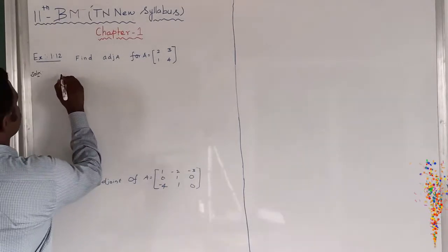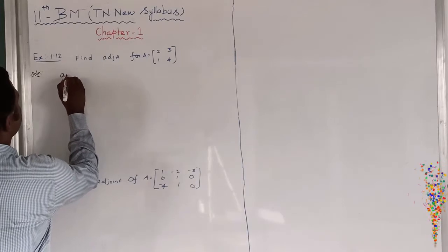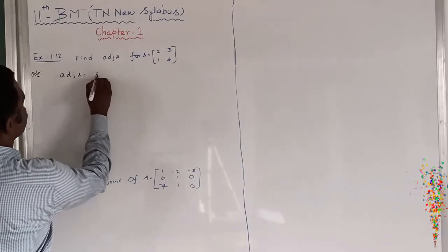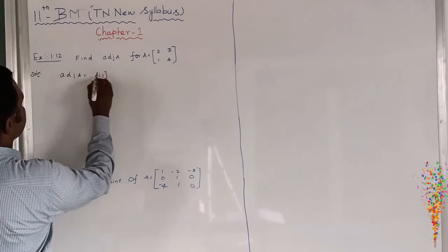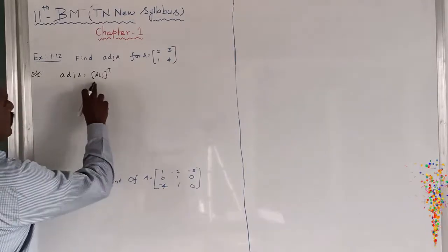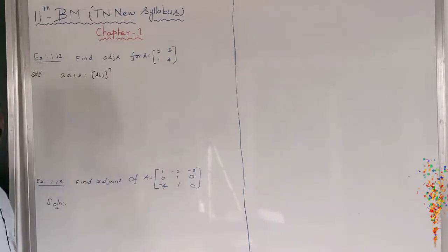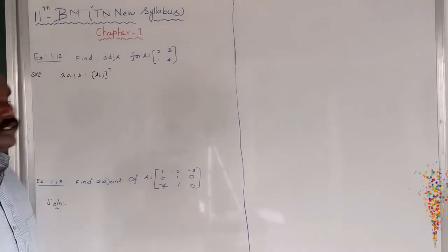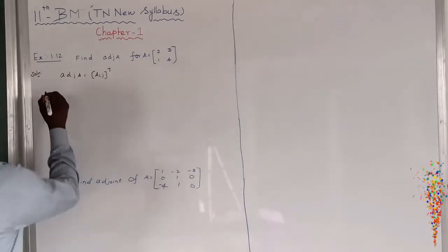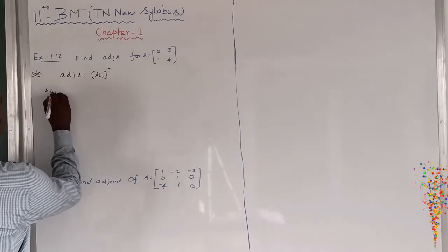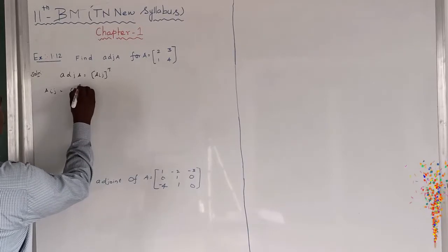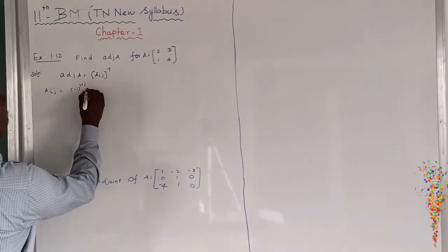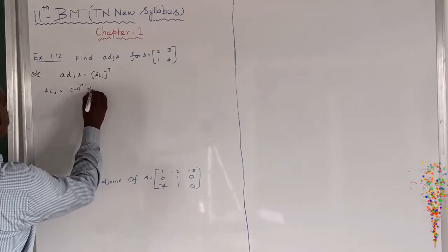We already know the solution where adjoint of A is equal to Aij, the whole transpose. Aij means the cofactor. First we need a minor, then we find the cofactor. The Aij formula is: Aij equals minus 1 to the power i plus j, into Mij.